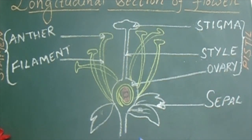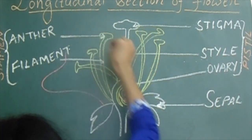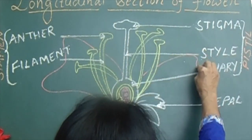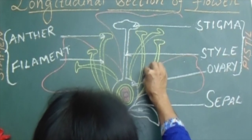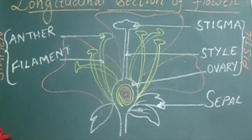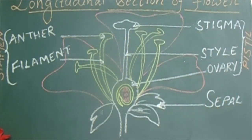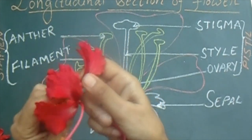Now the colored part of the flower — what do we call it? The colored part of the flower, we call it as petals. So let us draw petals. This is our petals, the colored part of the flower.